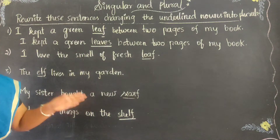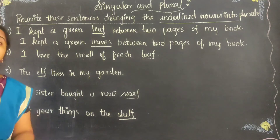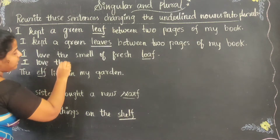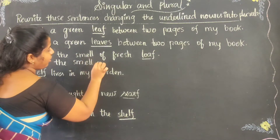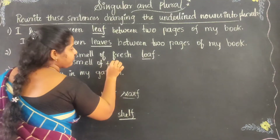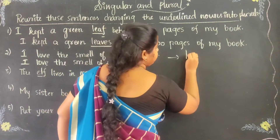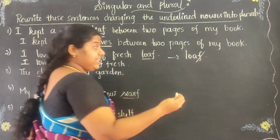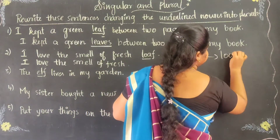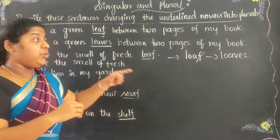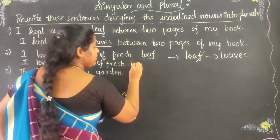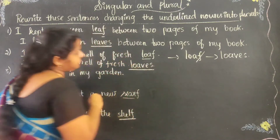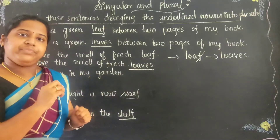If the word ends with F, we have to remove that F and then we have to add V-E-S. So the sentence changes into: I love the smell of fresh loaves. We change this into L-O-A-V-E-S. Loaf here is singular and loaves here is plural.